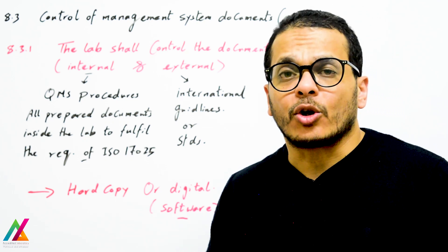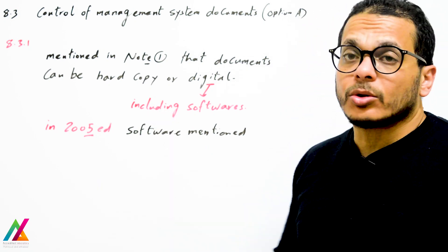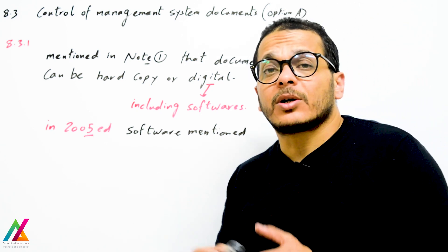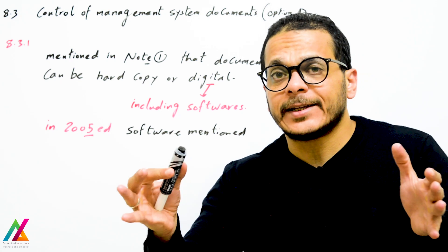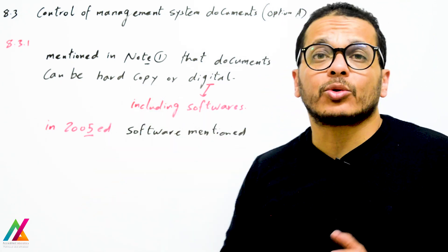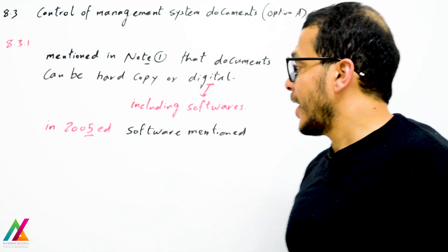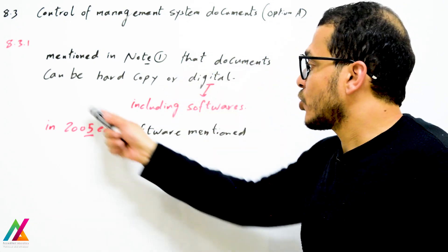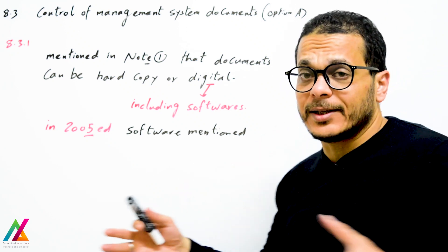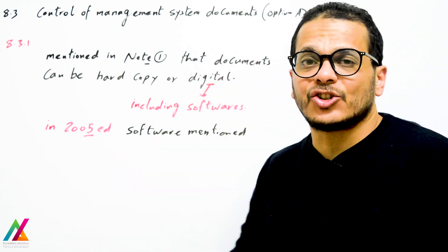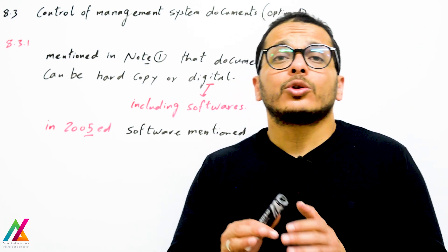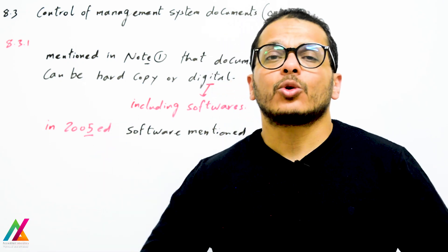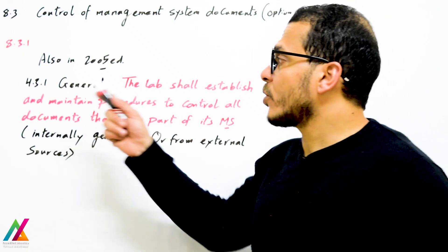If you have hard copy documents or digital documents such as software, you should control all of these. Note one mentions that documents can be hard copy or digital. In the 2005 edition, software was mentioned clearly as a document type, but in 2017 it is included under digital documents. So all documents — hard copy or digital, internal or external — shall be controlled.